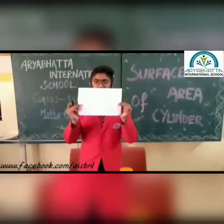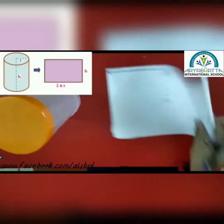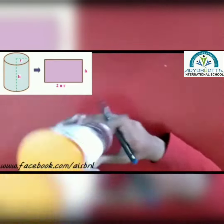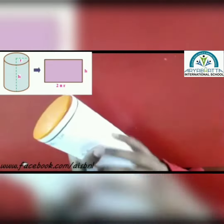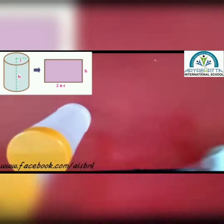Now this is a rectangle and this is the breadth of this rectangle. If I wrap this around the cylinder again, we will see that the length would be the circumference, which is 2πr, and the breadth would be the height.